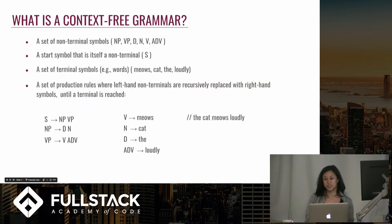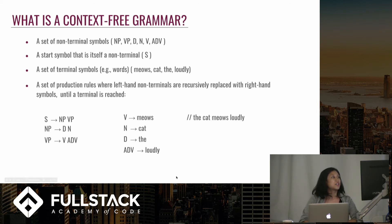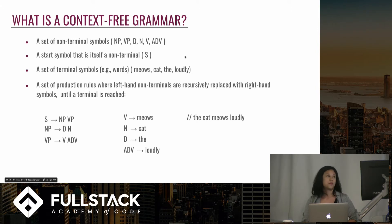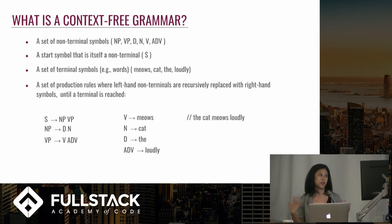So what is a context-free grammar? It consists of four elements. The first is a set of non-terminal symbols. Here these letters stand for a noun phrase, a verb phrase, a determiner, a noun, a verb, and an adverb. I'm using just basic English sentence structure here because we're all familiar with it, but a grammar can really be anything that you define it to be.